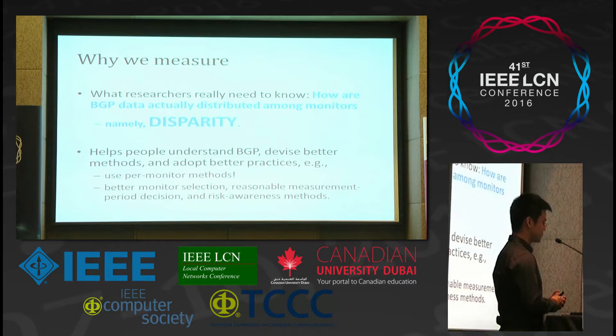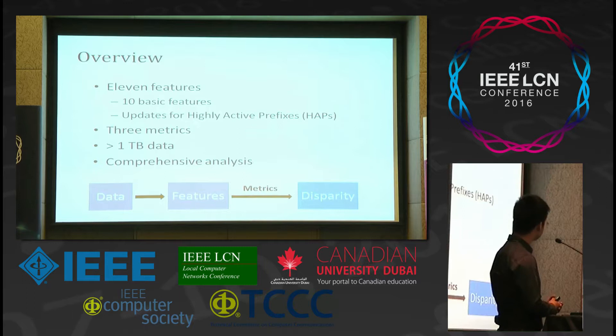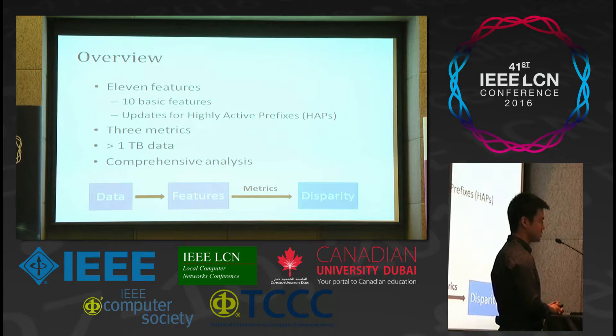This is an overview of our work. First, we introduce 11 features, including 10 basic features and updates for highly active prefixes. Then we use three metrics to assess the disparity. Then we apply our method to more than one terabyte of data, and conduct a comprehensive analysis. We use the data to extract features, and apply metrics to measure the disparity.